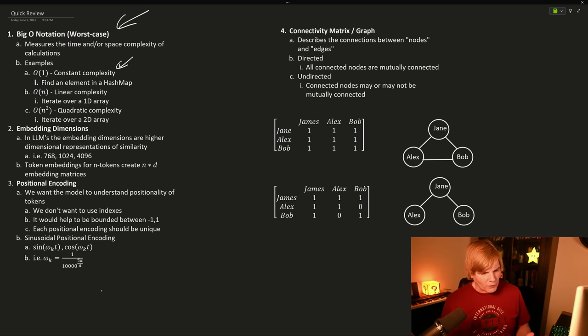For example, if I add an element to a hash map, searching for elements in that hash map remains a constant amount of time. Linear complexity, such as iterating over a 1D array - if I add an element, I've increased the amount of time to do that linearly.